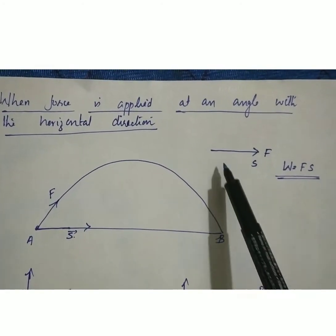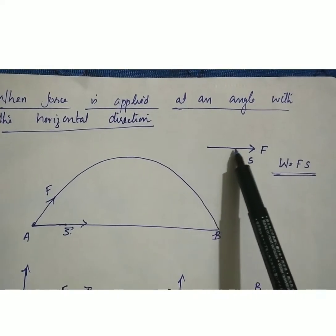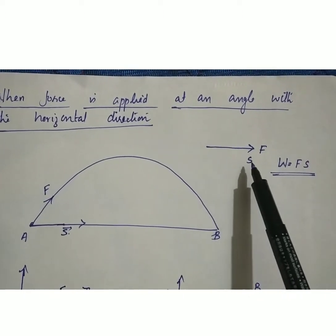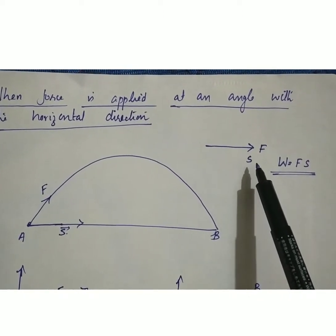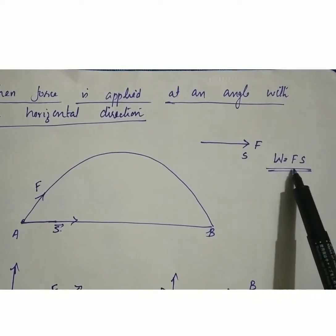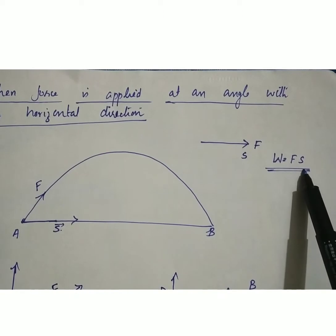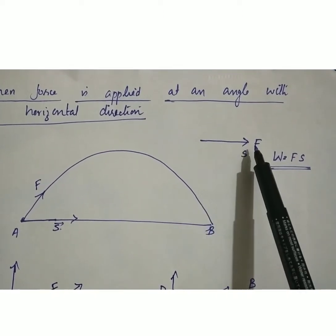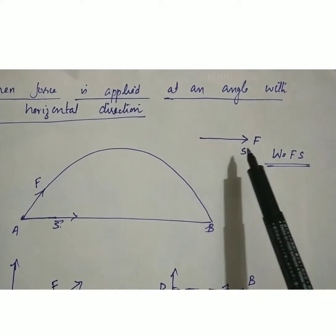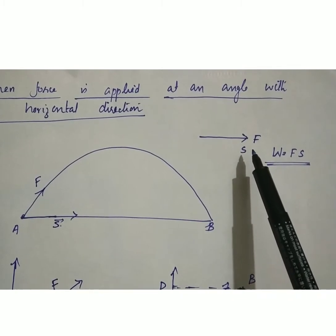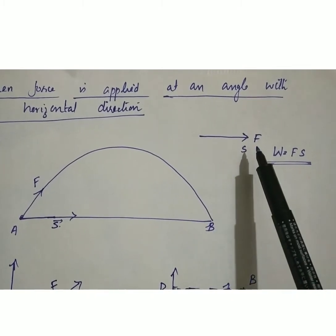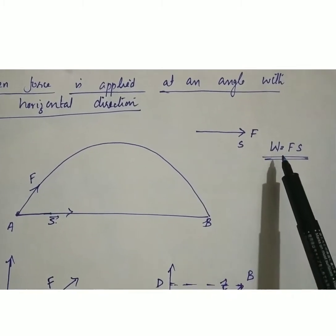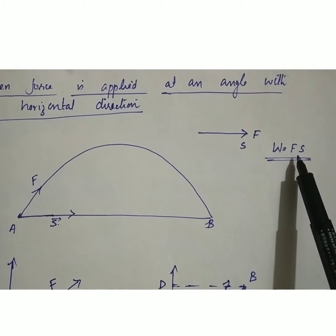We already know when a force is acting in the horizontal direction and a displacement is in the same direction, then W is equal to F into S. When a force is acting in a horizontal direction and a displacement is also in the horizontal direction, either in the direction of force or in the opposite direction, the work done is equal to F into S.